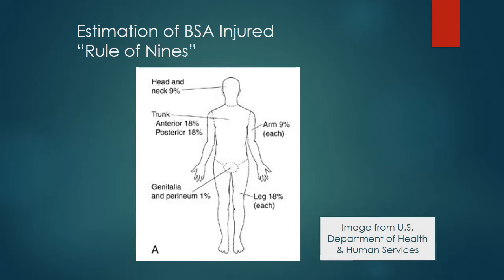The Rule of Nines is an estimation of body surface area injured. It is quick and dirty and done acutely. There is a much more accurate burn chart available once the patient reaches definitive care at a burn center or trauma center. For initial fluid resuscitation — what you'll be responsible for in NUR 210 — we use the Rule of Nines. The body is divided into areas of 9%, and we need 11 of them: 9 times 11 is 99%, and then we have that 1% which is the genitalia or perineal area in both the male and female.